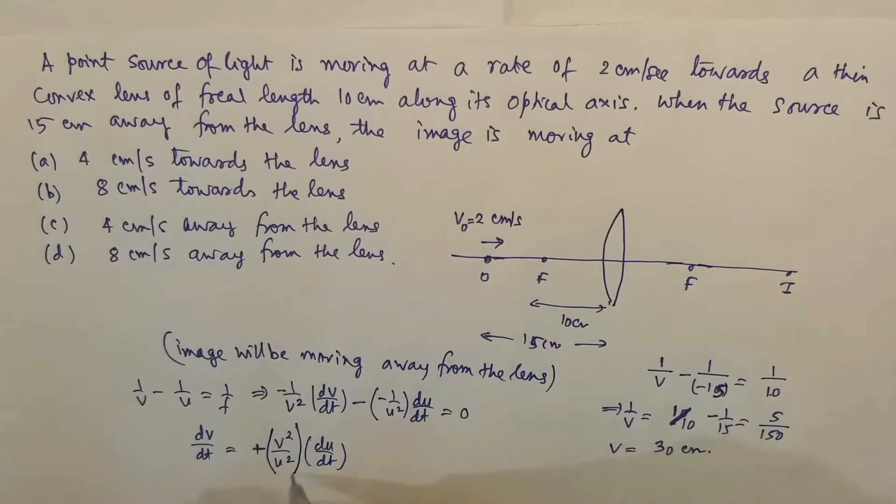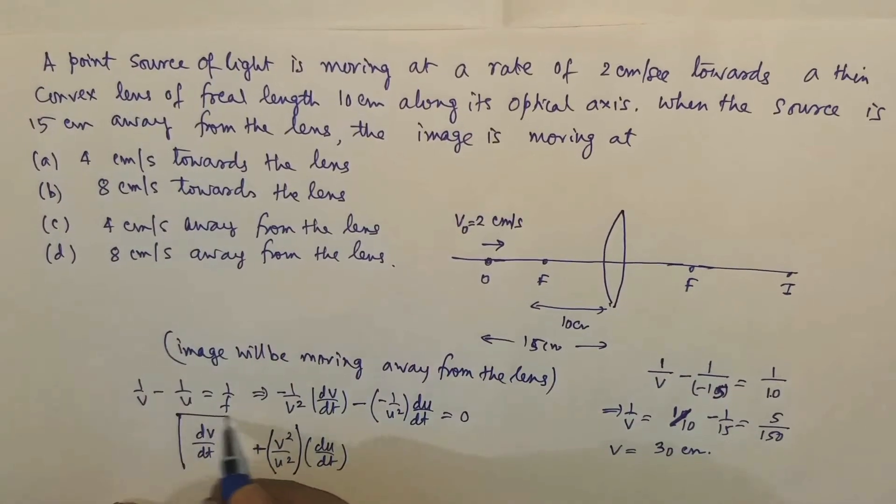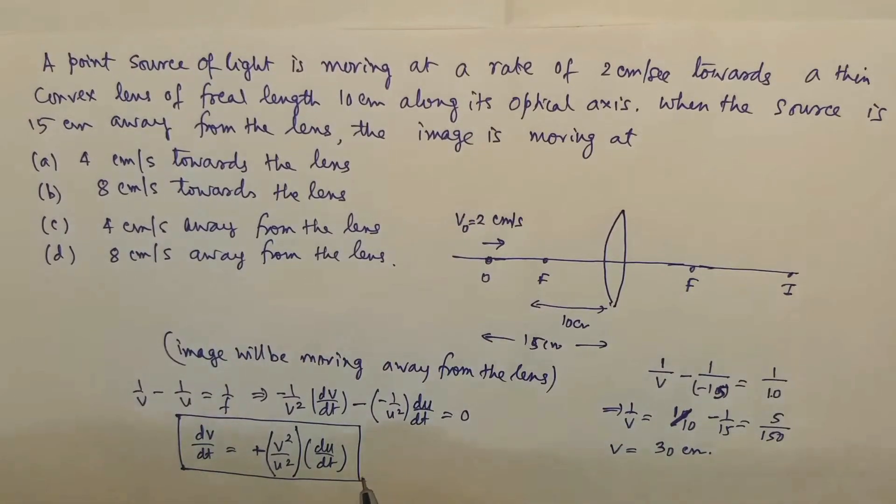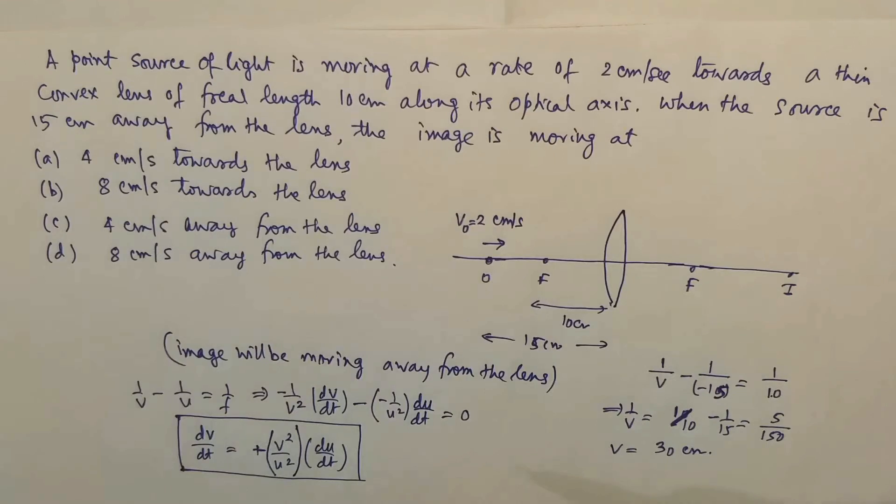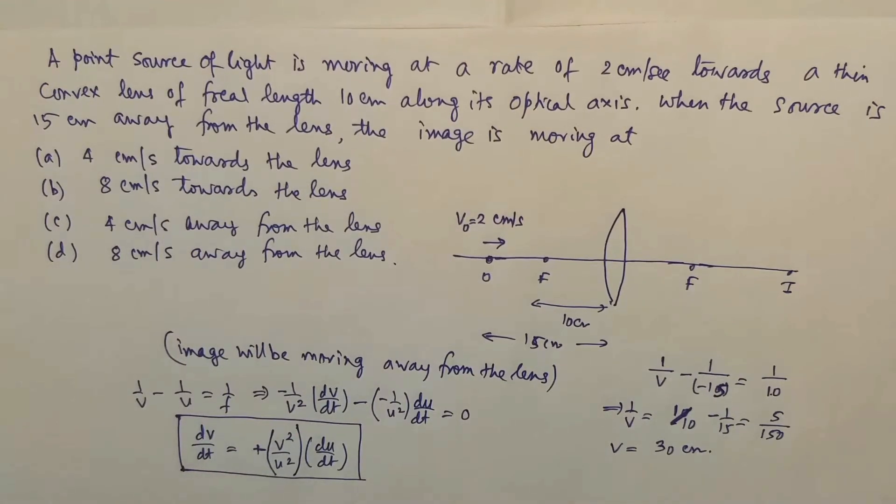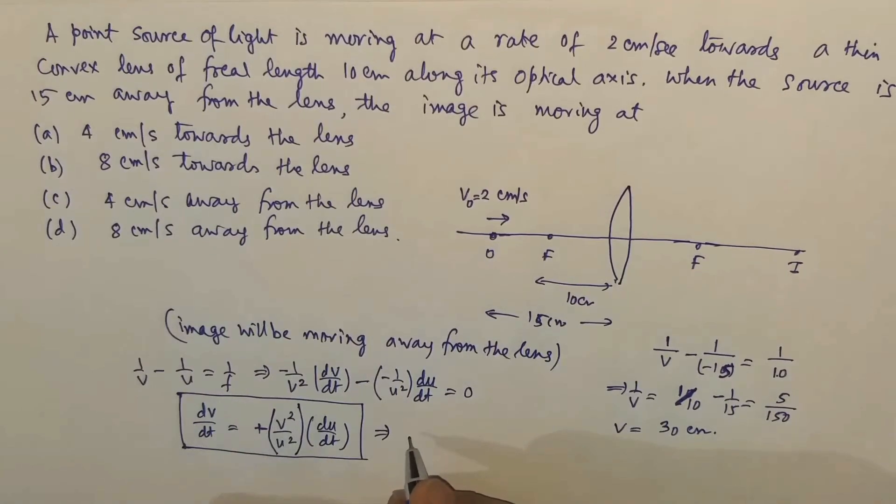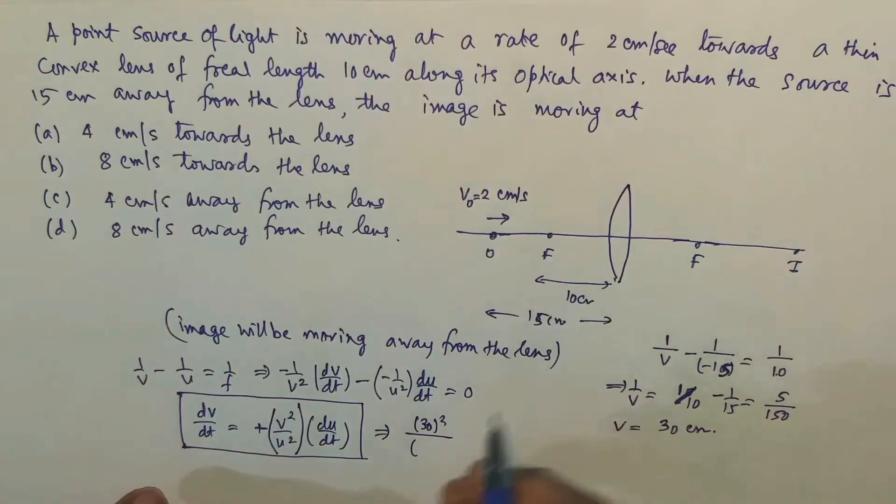So v²/u² du/dt, that means the speed of the image will depend upon the instantaneous position of the object and the image, the values of v and u. Let's put: we have v²/u², that is 30² divided by u is how much, minus 15, so you put 15 or minus 15, ultimately we are squaring it.